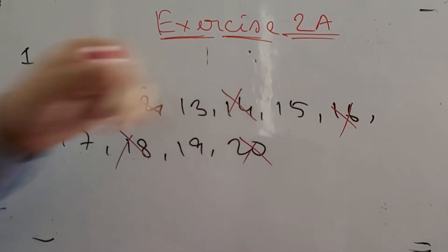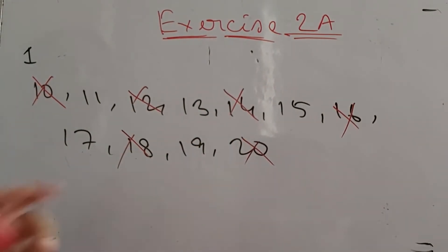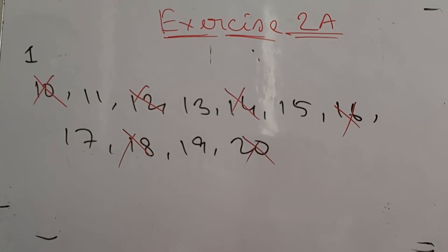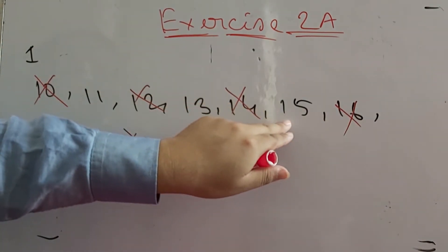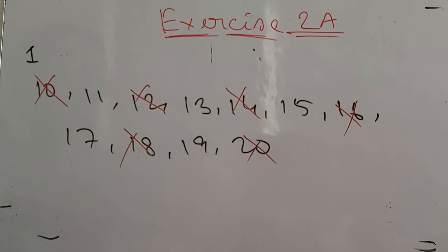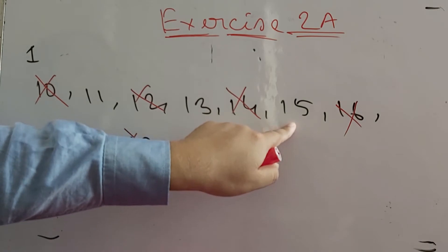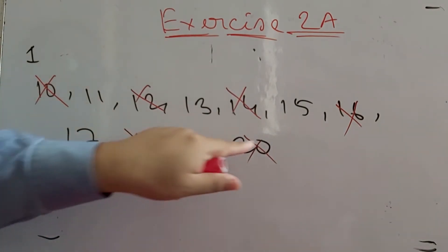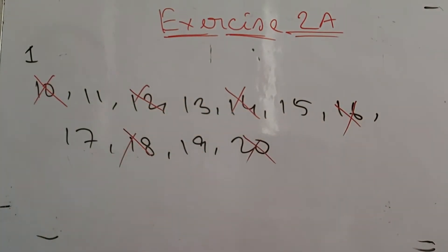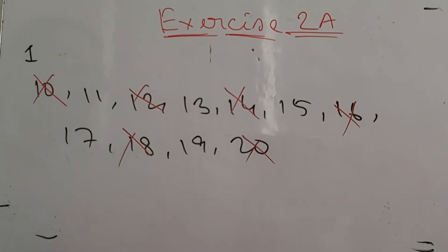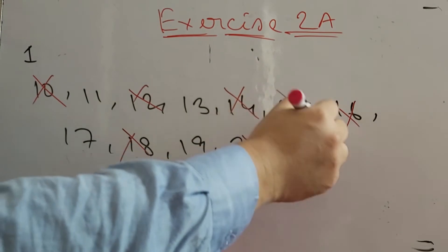We have only 5 numbers left. Now if we look at 15: 15 can be divisible by 5 and 3. If we add the digits of 15, 1 plus 5 equals 6, and 6 is divisible by 3, so 15 is also divisible by 3. Also, since the units digit of 15 is 5, it is divisible by 5. So 15 cannot be a prime number.